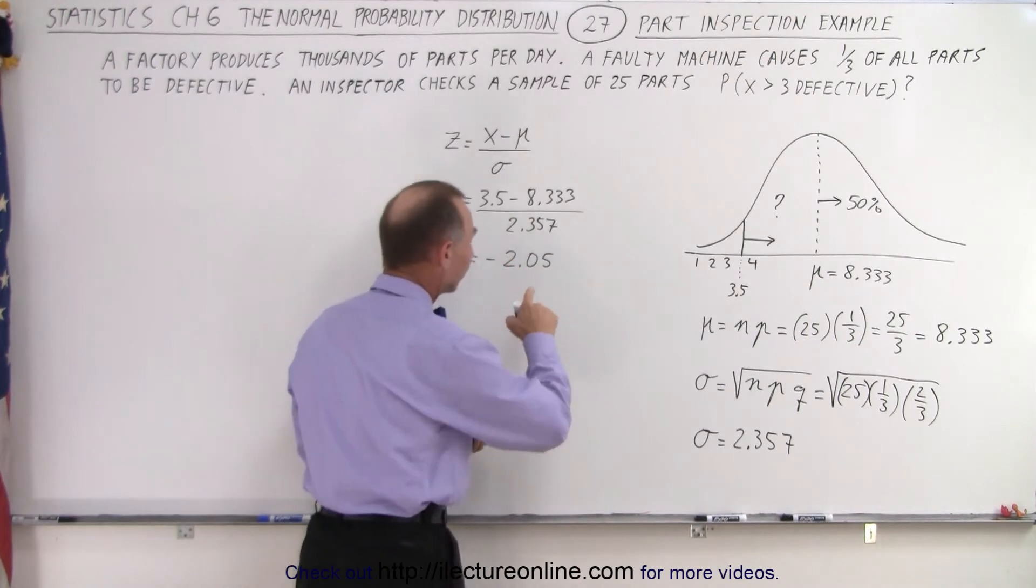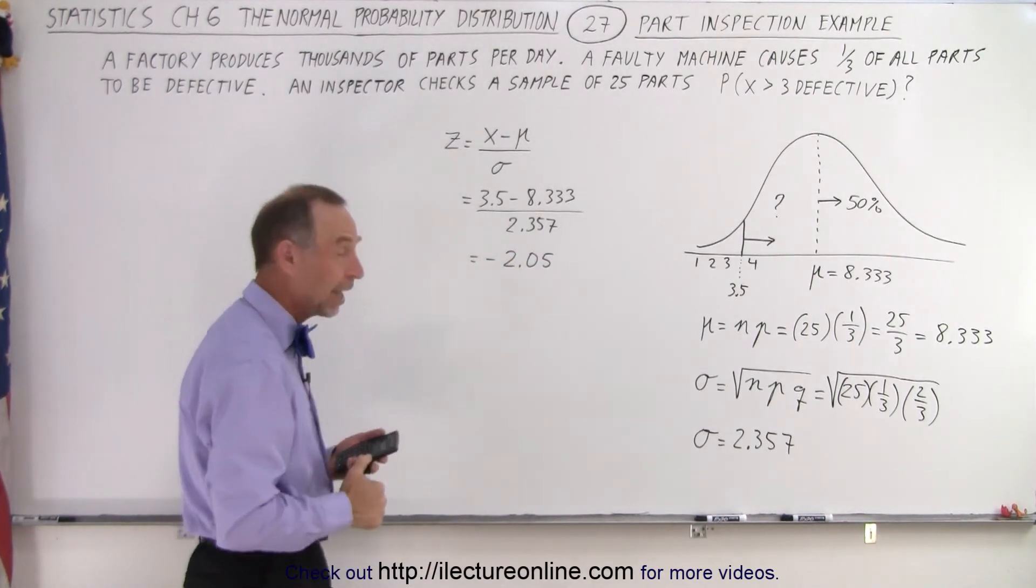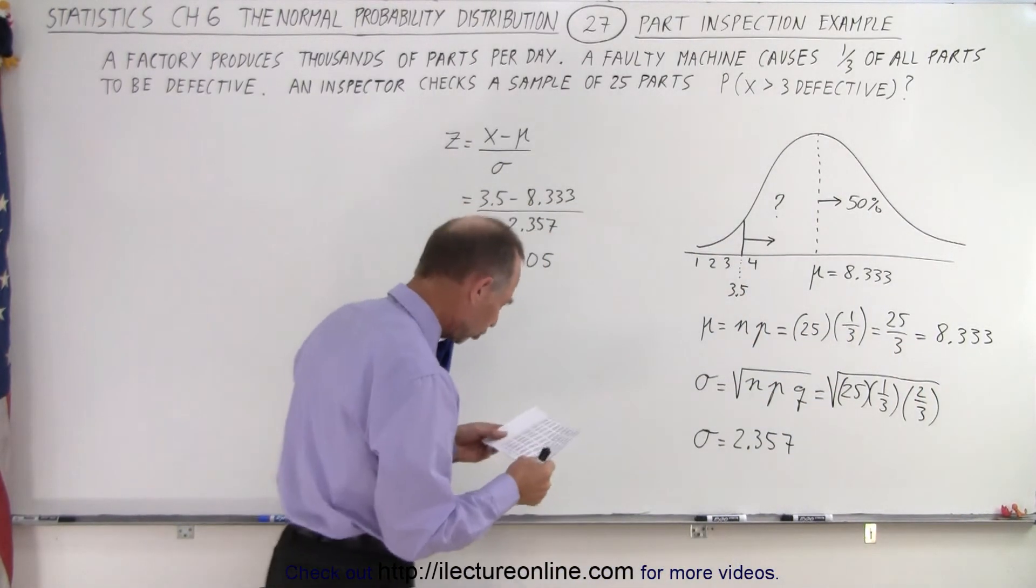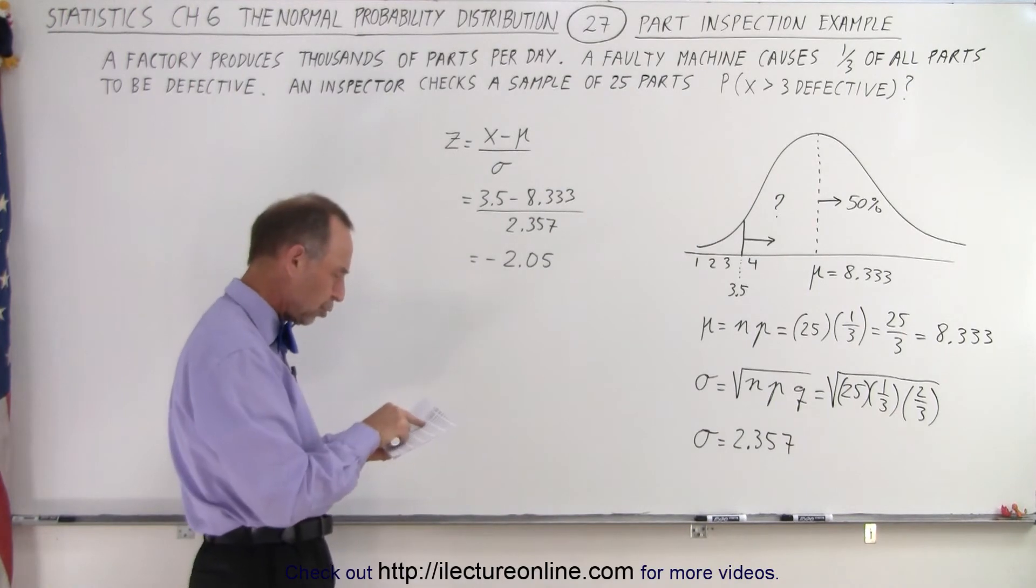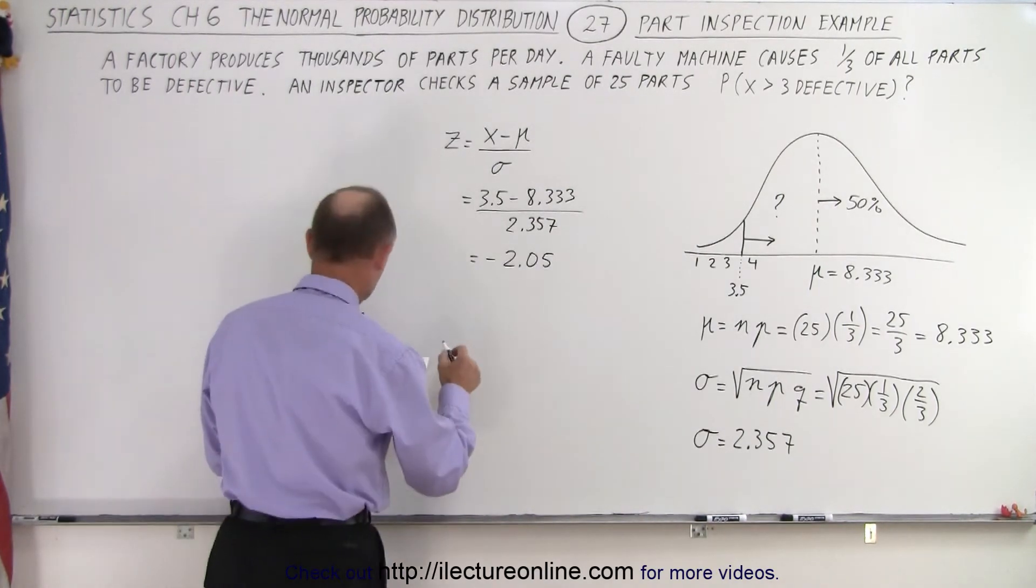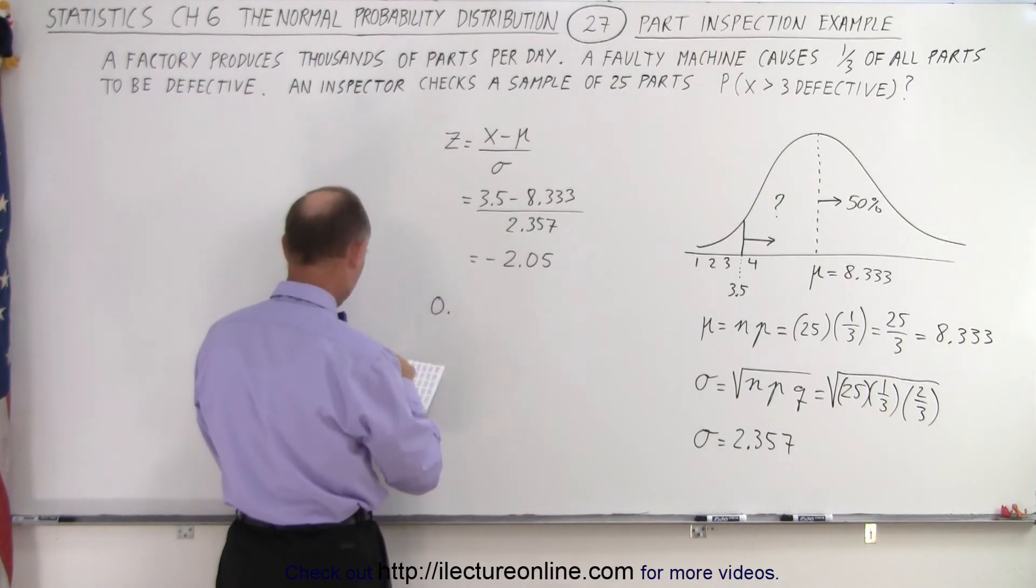Now, of course, that's the number of sigmas to the left of the mean, 2.05 sigmas. Now we need to find on the table the equivalence in the percentage. So let's see, here we have 2.05. So the number that I find on the table is 0.47982.